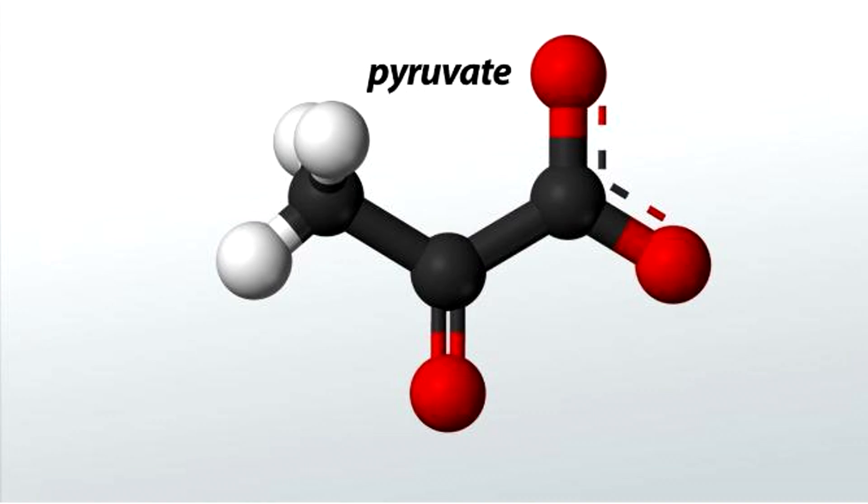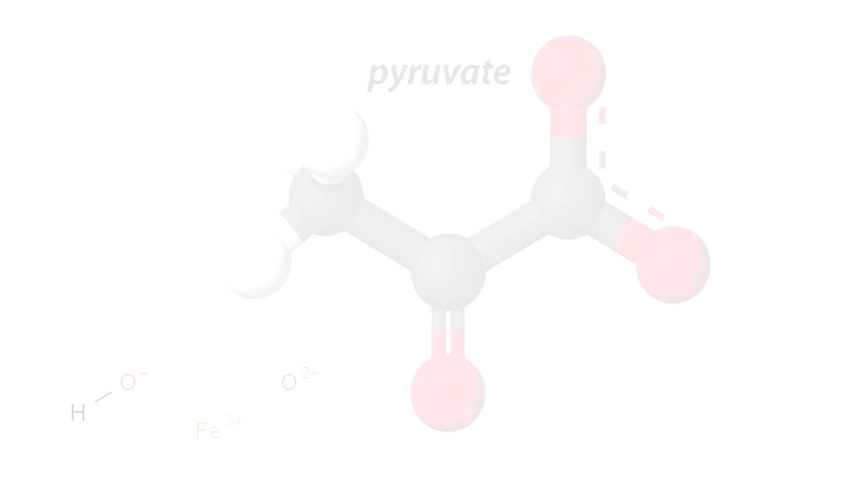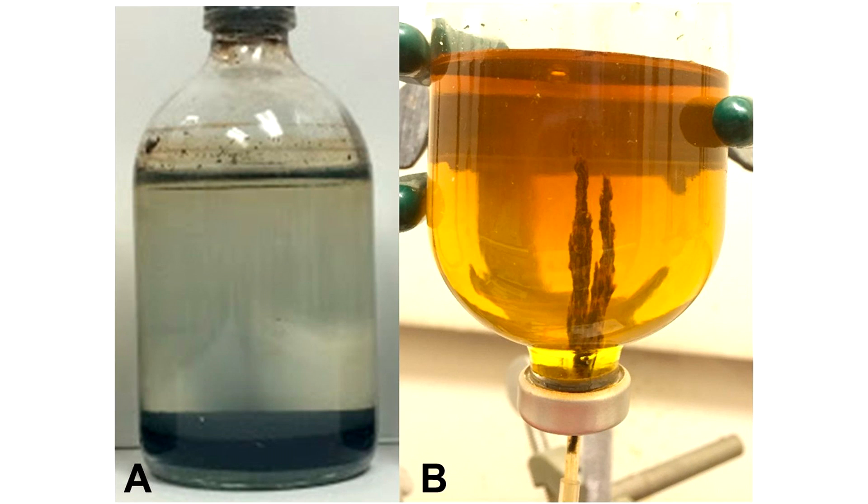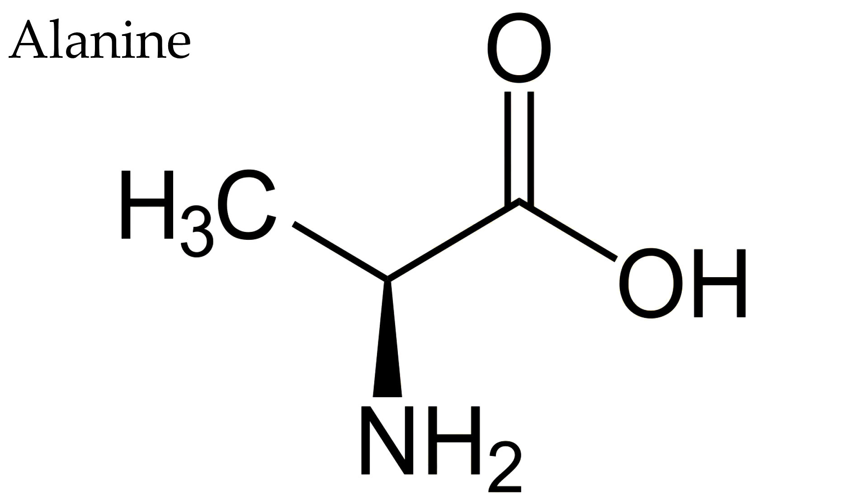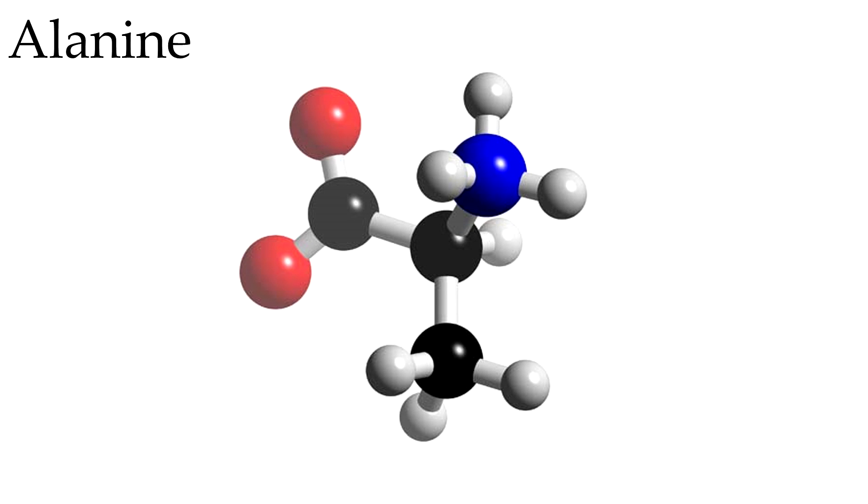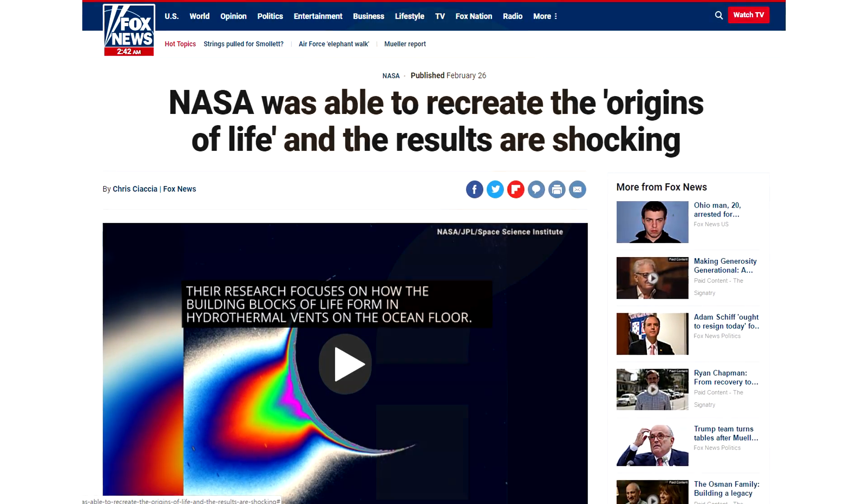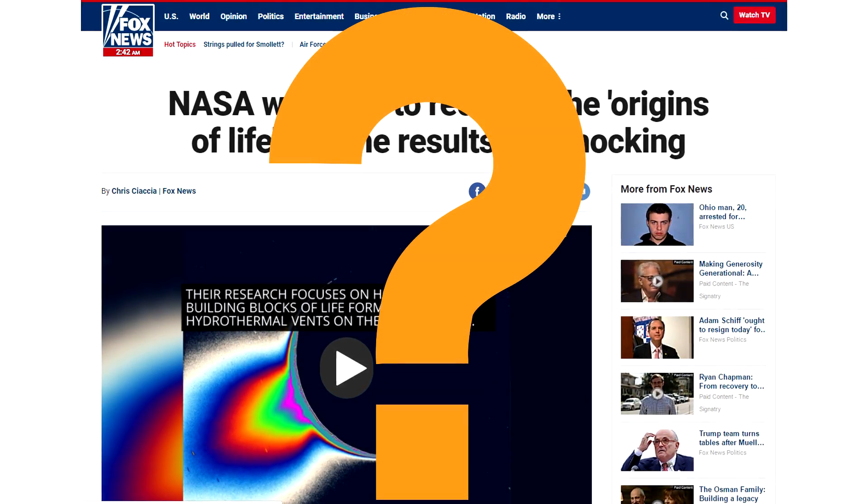The research in this study utilized the organic compound pyruvate in a reaction with a specialized form of iron, called an iron oxyhydroxide. Under the human engineered and controlled conditions, the researchers were able to get the reaction to produce the amino acid alanine. In other words, only one of the 20 amino acids needed for proteins in real living cells was produced, and the media claimed it recreated the origins of life.